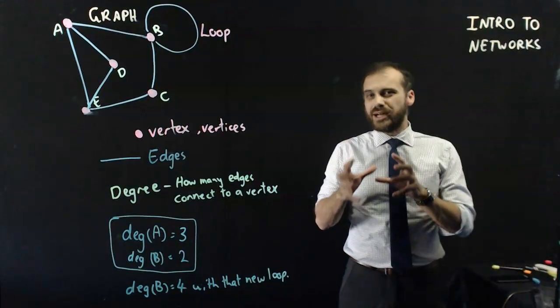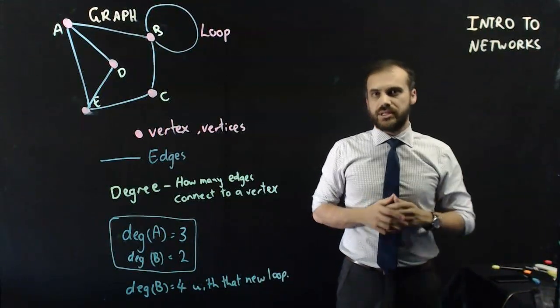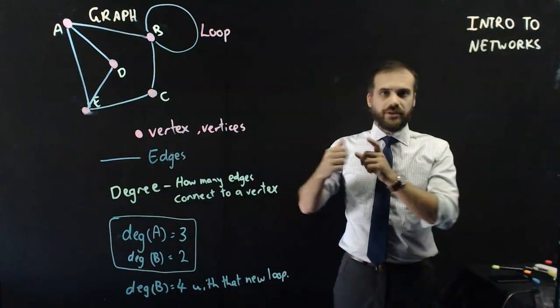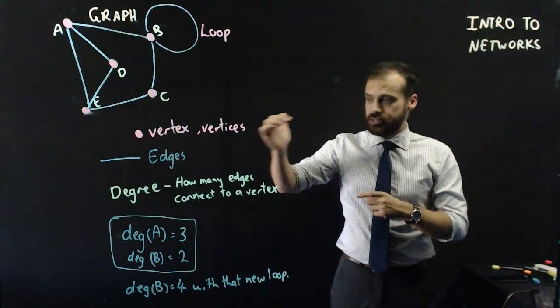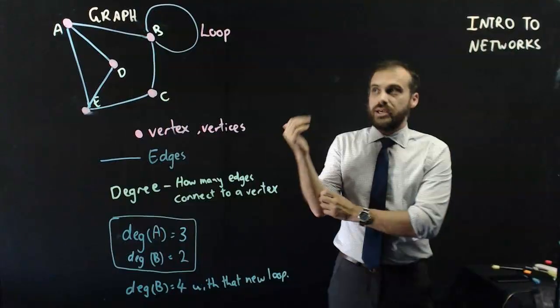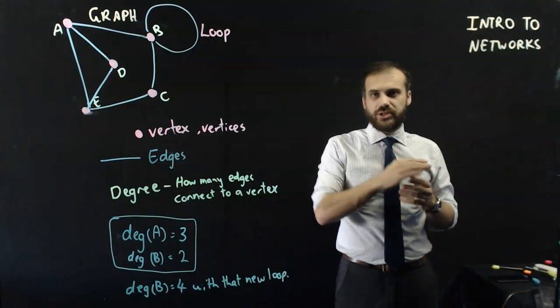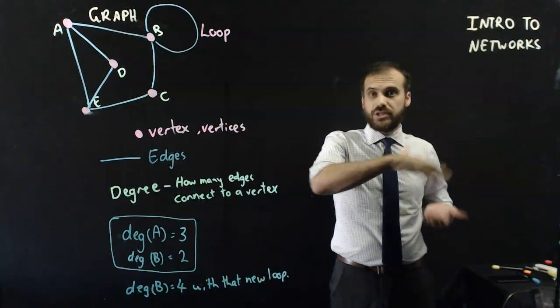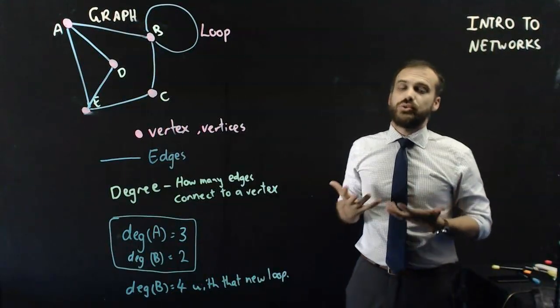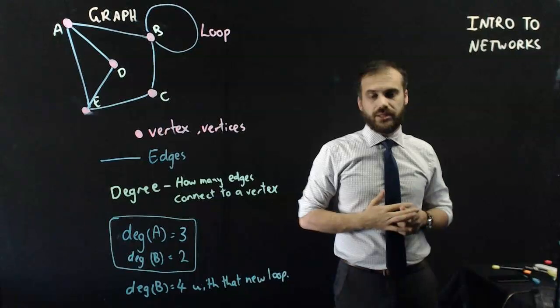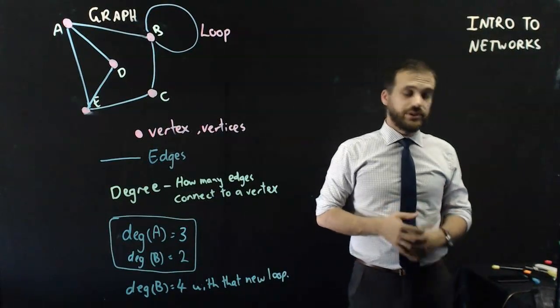There is so much new language that you're going to have to learn when it comes to networks. Graph, vertex, edges, degree, and loops. There are so, so many. You want to go into the back of your book and start writing yourself a glossary, because you're going to end up with like 20 new words, and you're going to have to understand what they all mean. All right, that's our beginning to networks. Thanks.